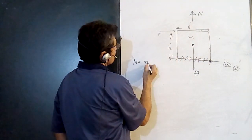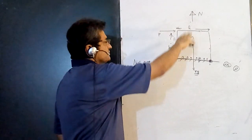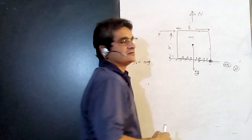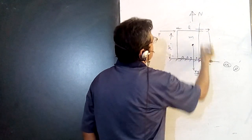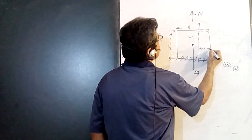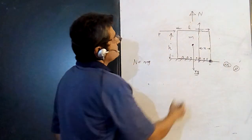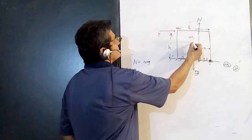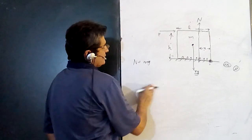N is equal to mg if the block is not moving vertically. Now, where will this N act? It can actually be anywhere. Suppose N is at some location which is at a distance x from a reference point. Let me assume that N is at this location — not at the edge, but at this interior location.